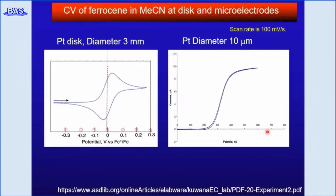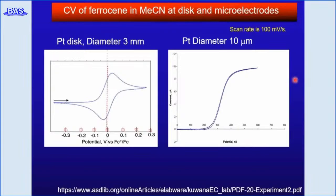Here are typical cyclic voltammograms measured with different electrode sizes for ferrocene at a scan rate of 100 mV per second. A platinum disc electrode with 3 mm diameter shows a normal reversible CV response with anodic and cathodic peaks, as shown on the right-hand side. When the electrode size becomes smaller — in this case a 10 µm diameter electrode — the voltammogram changes to a sigmoidal curve, indicating that a steady-state voltammogram is obtained at the microelectrode.